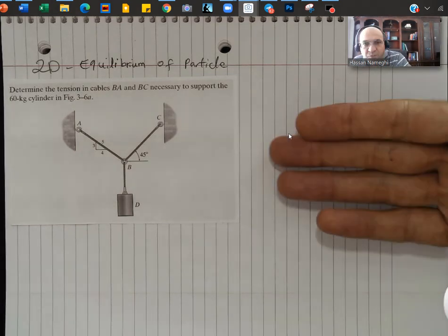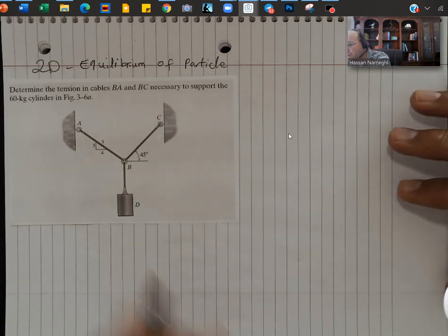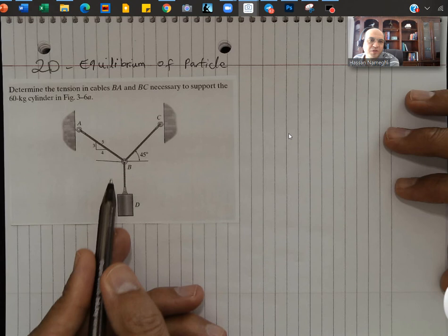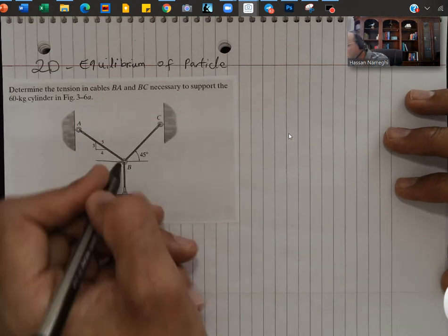So in order to solve a problem involving 2D equilibrium, we start with first we find the angles. If in this case I don't know the angle, I know the ratio is 3-4-5, I would need to find the angle.